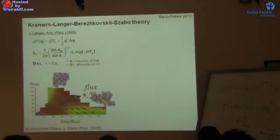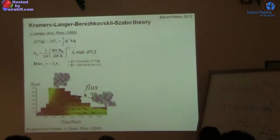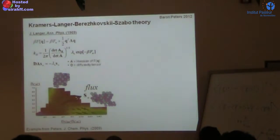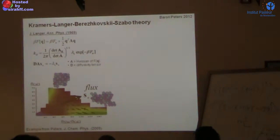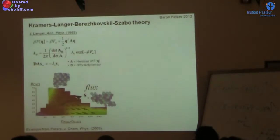Berezhkovskii and Szabo wrote a beautiful paper in J. Chem. Phys. in 2005 asking: what if we take Langer's theory for the many-dimensional system and suppose we just randomly pick a direction and use it as our reaction coordinate? If you project both the free energy matrix A and the diffusion matrix D onto a direction E, you get a one-dimensional diffusivity E·D·E and a corresponding projected free energy curvature. You then plug those back into one-dimensional Kramers' theory to get a rate expression — and this is not the same as the full multidimensional rate. This makes clear you have to know what direction to pick to get the right answer.